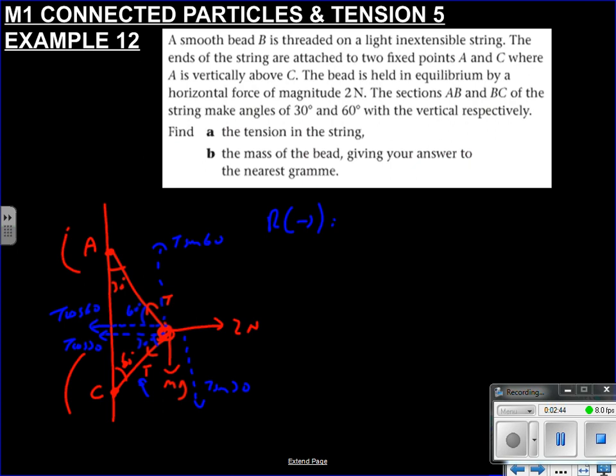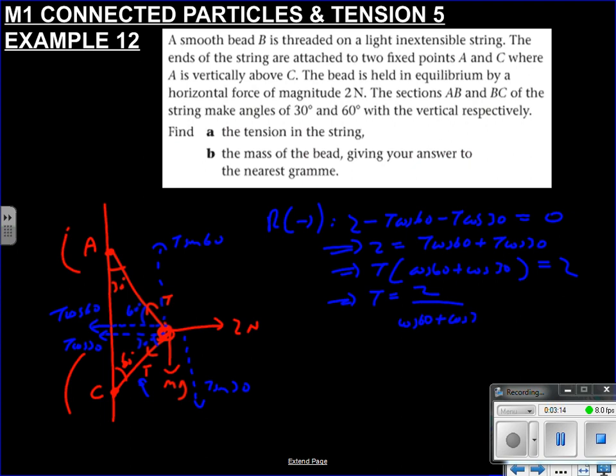So if we resolve to the right, 2 is going right, and there is T cos 60 and T cos 30 opposing it. It's in equilibrium, so it equals zero. So we know that 2 is T cos 60 plus T cos 30. Take out a factor of T, so that's cos 60 plus cos 30 equals 2. Divide by that, and we get our T. So calculators out folks, so that's 2 over cos 60 plus cos 30. So I've got 1.46 Newtons to 3SF. So again, you check that. I could make mistakes. I've made them before, like in the integration video. But luckily I've spotted it at the end.